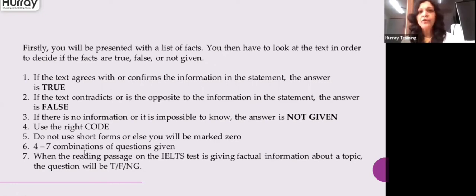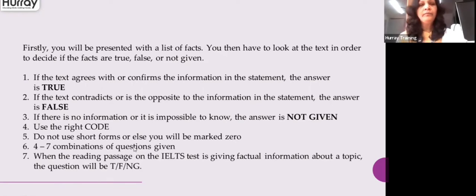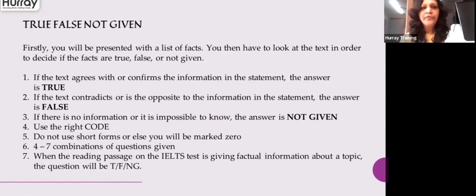You will have 4 to 7 combination questions given in a test paper. The reading passage on the IELTS test gives factual information about the topic — the question will be true, false, or not given. If it is based on the opinion of the writer, it will ask you to write yes, no, or not given.